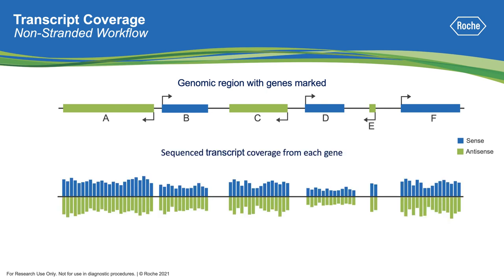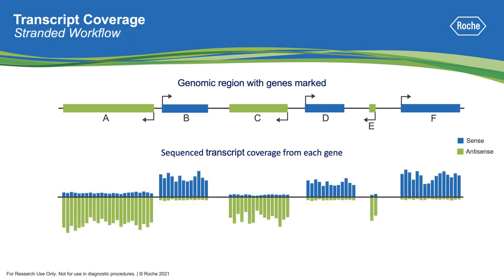If we look at the coverage of the transcripts for these genes from a non-stranded RNA workflow, we see the coverage for all of the gene regions. However, we're left without the confirmation of which strand the gene is transcribed from. In a stranded workflow, we can see that the measurement of transcript coverage will help determine the strand orientation of the gene.